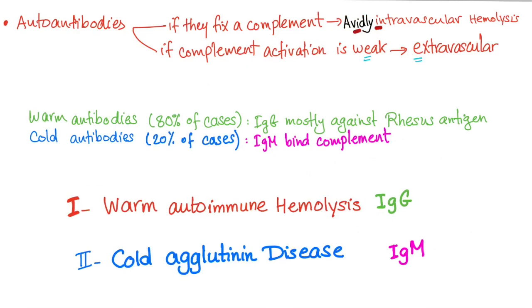Autoantibodies have two different choices. They can fix the complement avidly — when they fix the complement avidly, it's intravascular hemolysis. However, when the complement activation is weak, it's extravascular hemolysis.